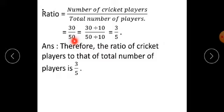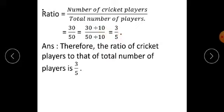Both these numbers are divisible by 10. Therefore, 30 divided by 10 upon 50 divided by 10. The simplest form we get is 3 upon 5, because 30 divided by 10 gives you 3 and 50 divided by 10 gives you 5. Therefore, the ratio of cricket players to the total number of players is 3 upon 5.